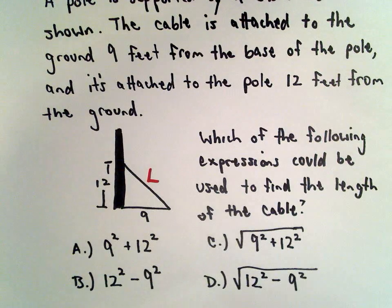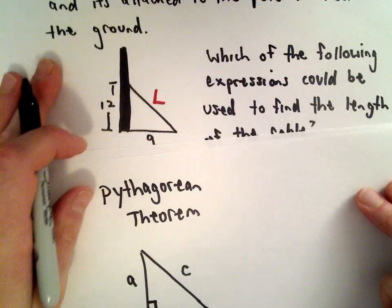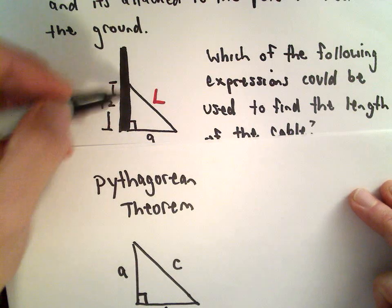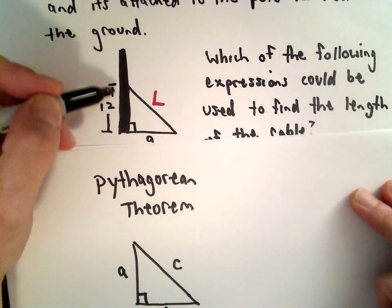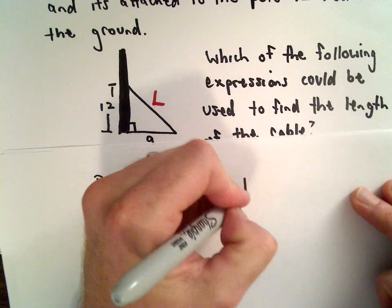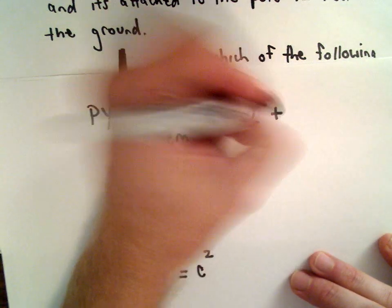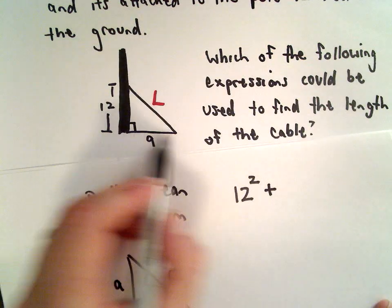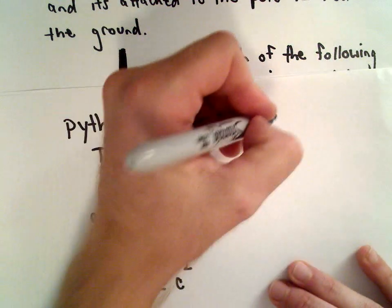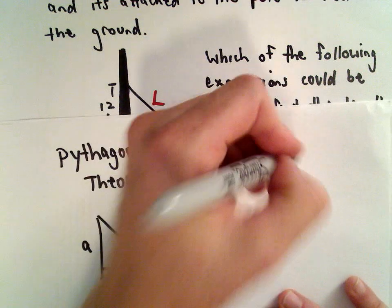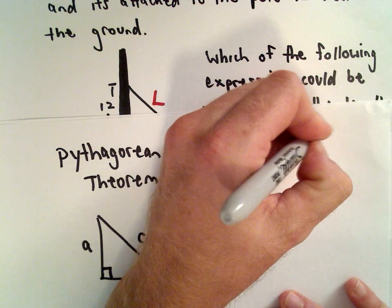We've got a right triangle here. My diagram is not the best in the world, but we've got a little right triangle here. In this case, the height, that's going to be 12. So 12 squared, that would be like my A, plus we take the other side, which is 9 squared. And that's going to equal the length squared.